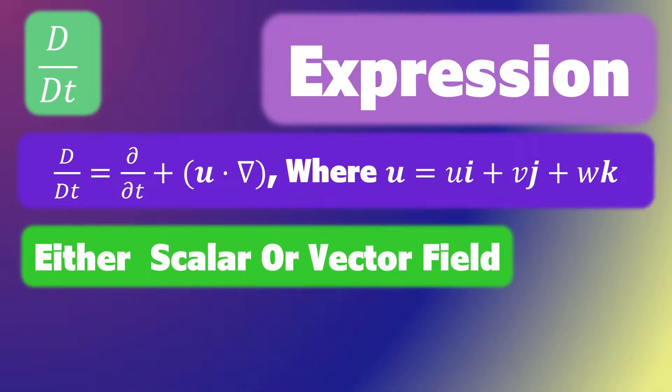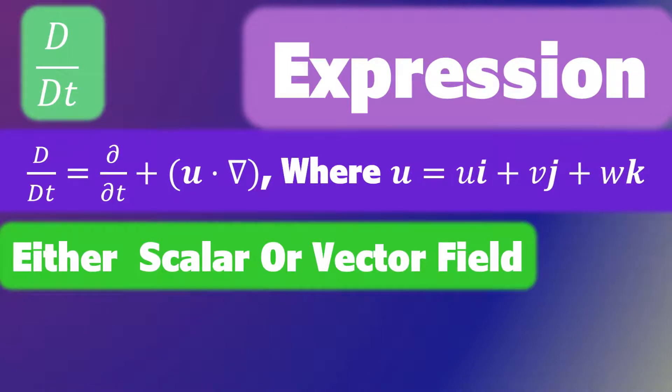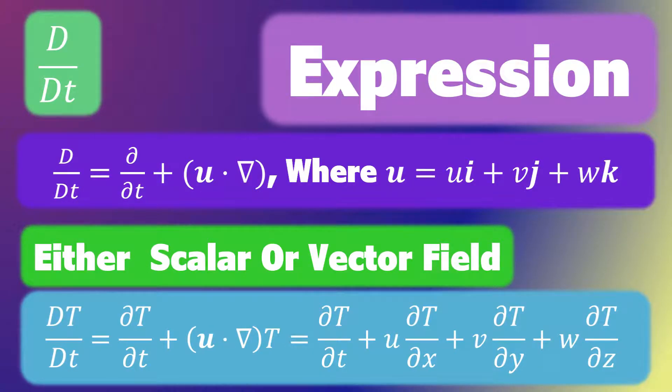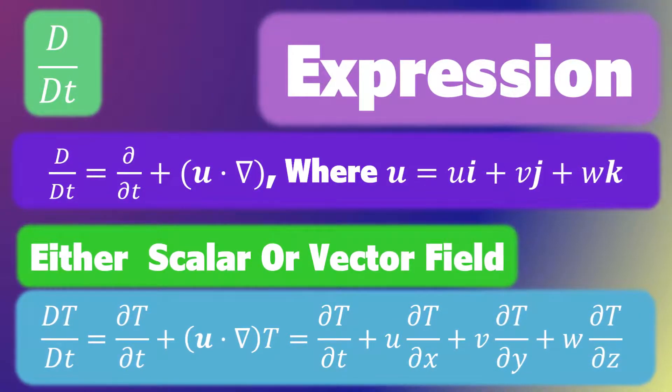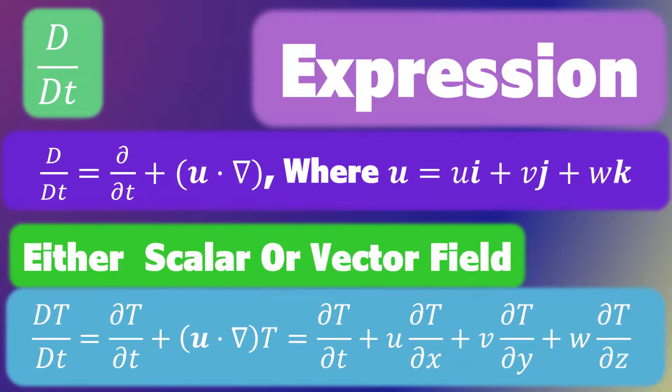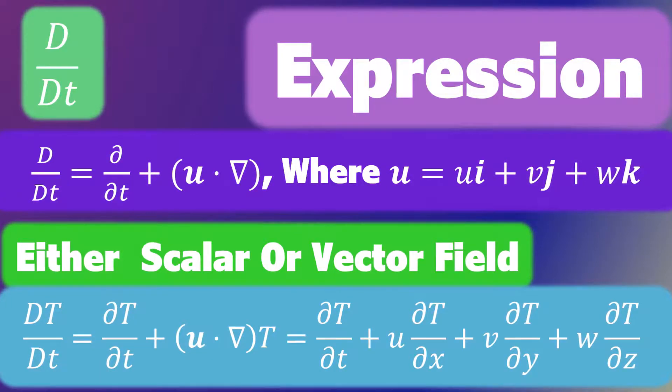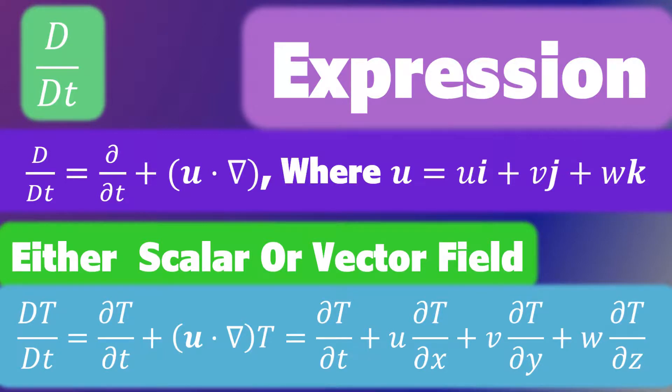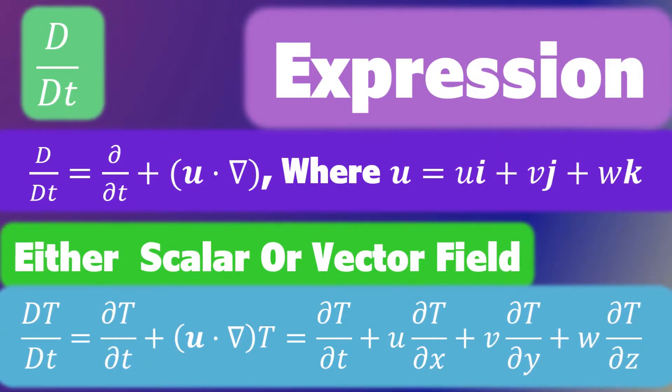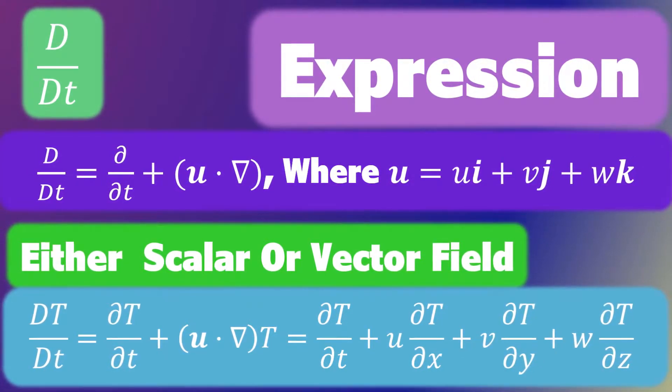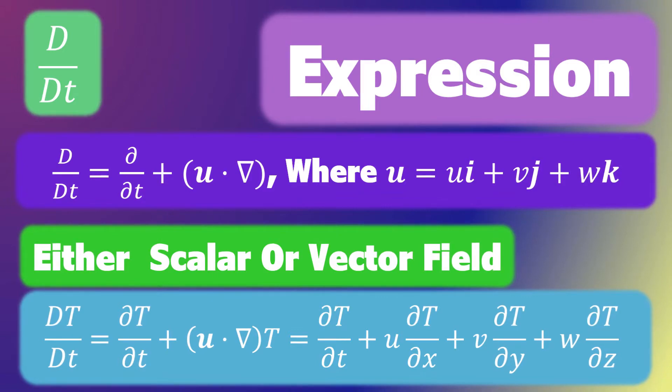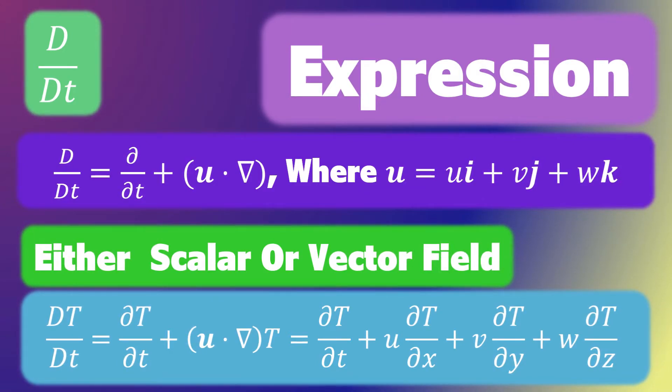The convective derivative can be applied to either scalar or vector fields. For example, if T of x, y, z, and time represents the temperature, then the convective derivative would be capital DT over capital DT equals the partial derivative of T with respect to time plus u dot grad of T, which equals ∂T/∂t plus u∂T/∂x plus v∂T/∂y plus w∂T/∂z.